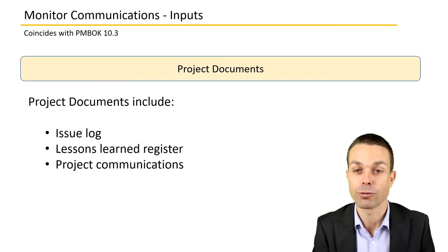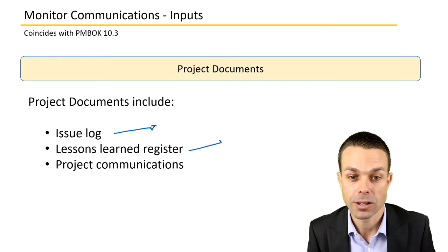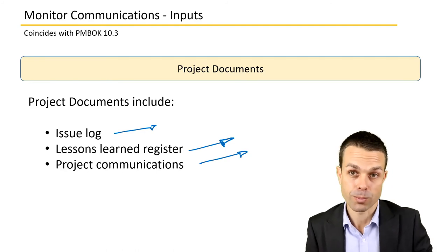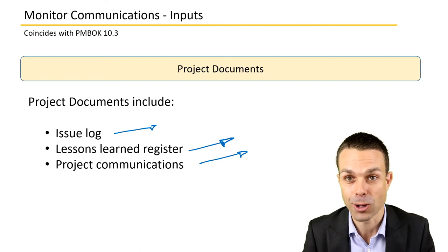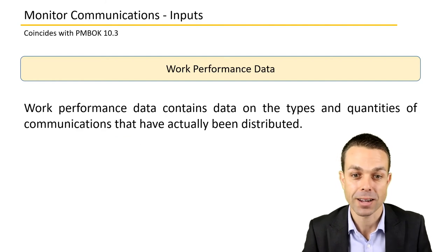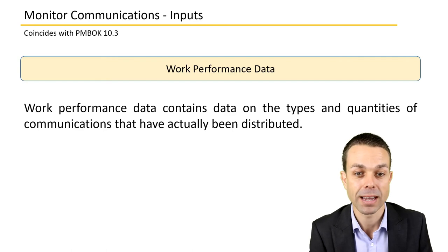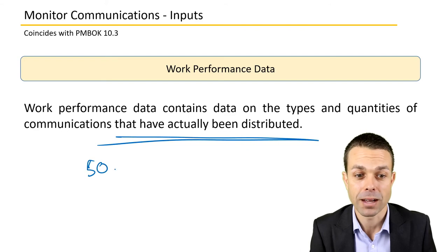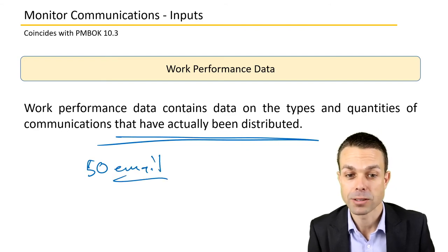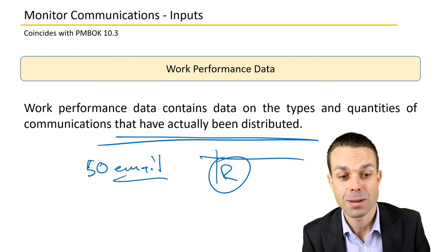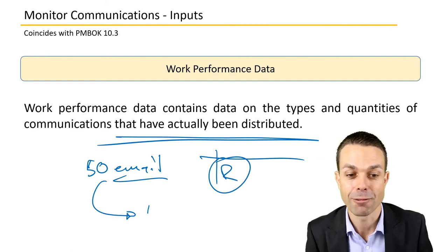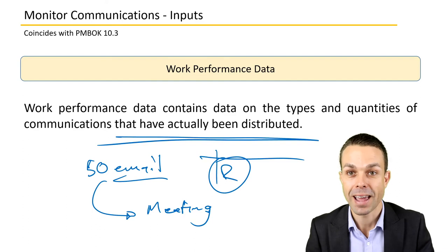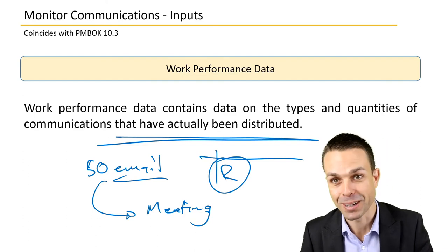Project documents as inputs include issues that have been raised, lessons learned from other projects, and the project communications themselves — what communications did we use and have they worked? Work performance data may contain data on types and quantities of communications that have actually been distributed. For example, have we sent 50 emails and yet our stakeholders are still resistant? Maybe we need to change approach and have meetings instead. This is where we monitor and control, keeping things on track.